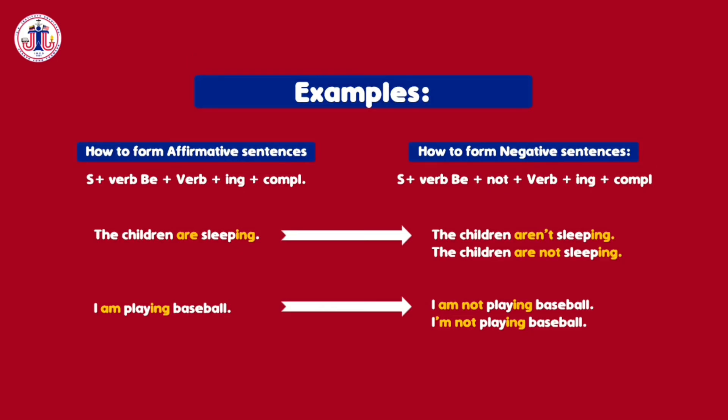How to form affirmative sentences: you need the subject plus the verb 'be' plus the verb plus -ing plus the complement. For example: 'The children are sleeping' or 'I am playing baseball.'